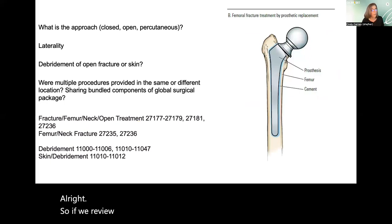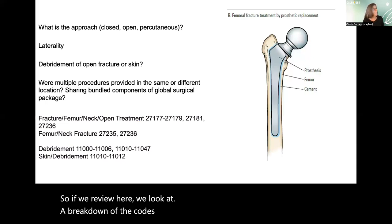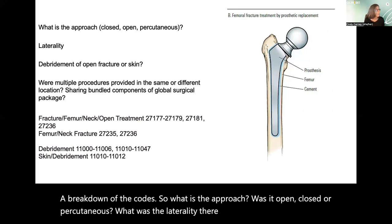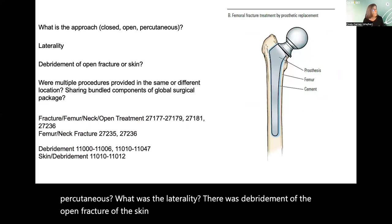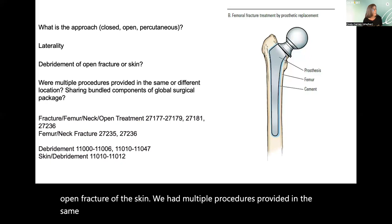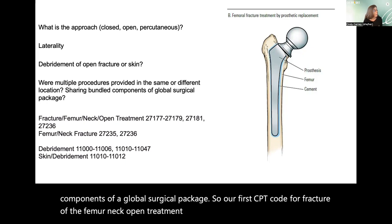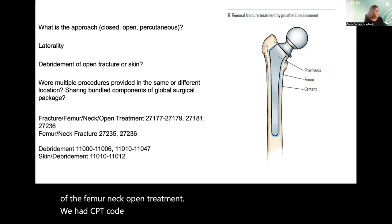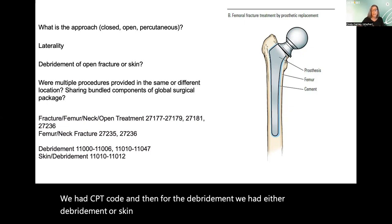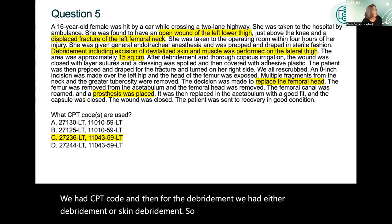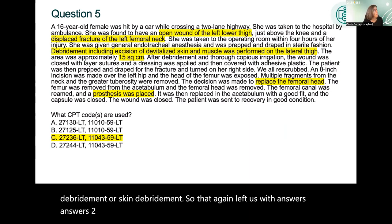Reviewing the code breakdown: What was the approach — open, closed, or percutaneous? What was the laterality? There was debridement of an open fracture site. Multiple procedures were provided, making sure no bundled components of a global surgical package are duplicated. For the fracture of the femur neck with open treatment, CPT code 27236 was used. For the debridement, CPT code 11043 was used, leaving us with 27236 and 11043.